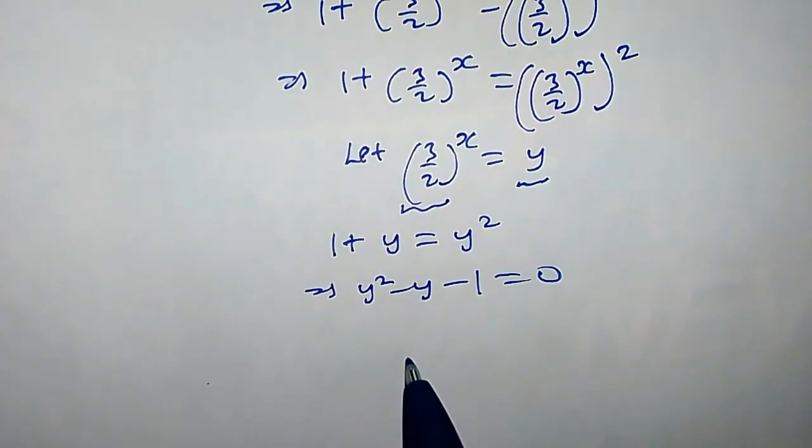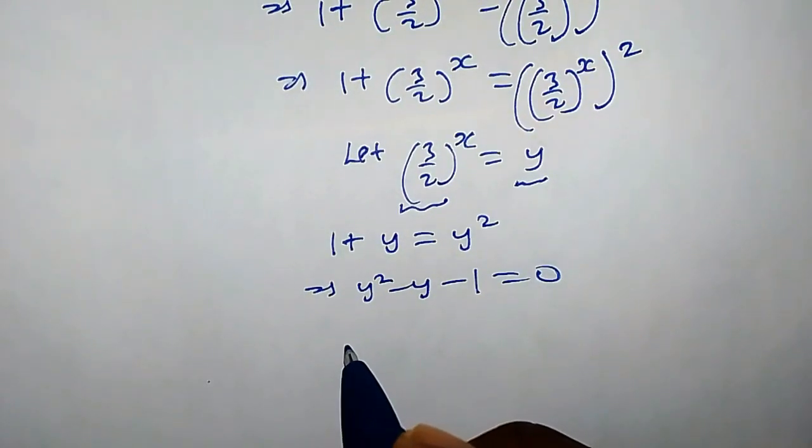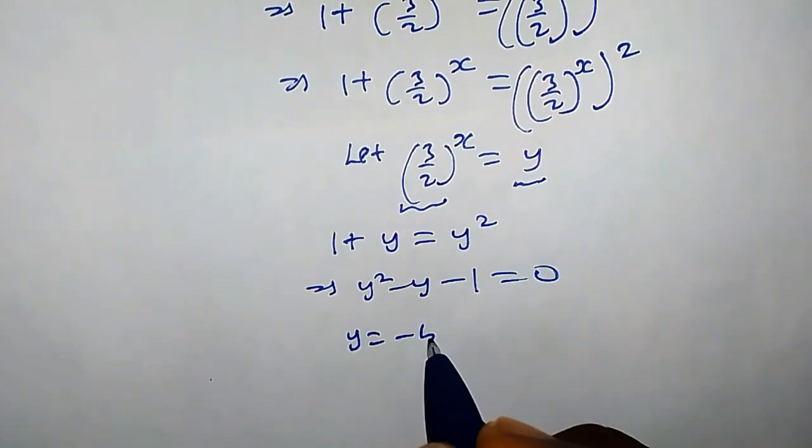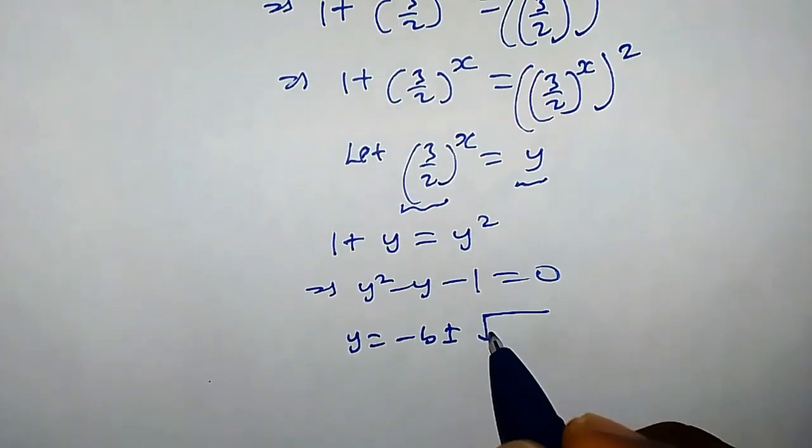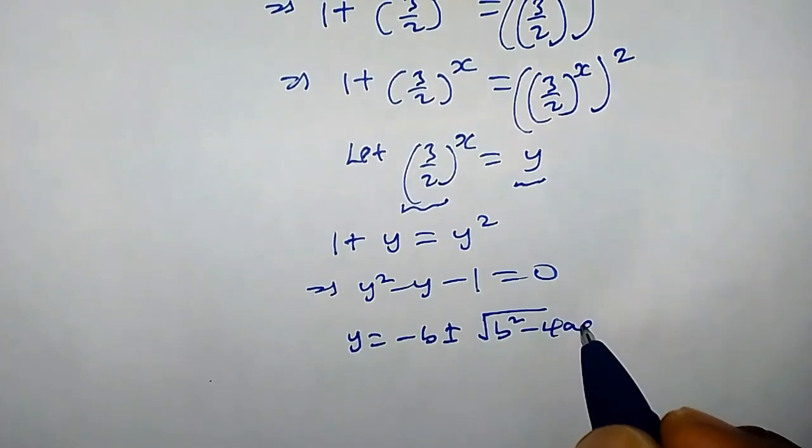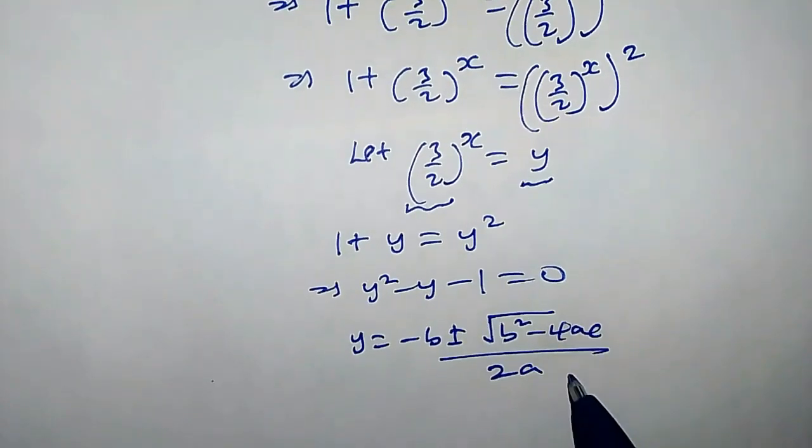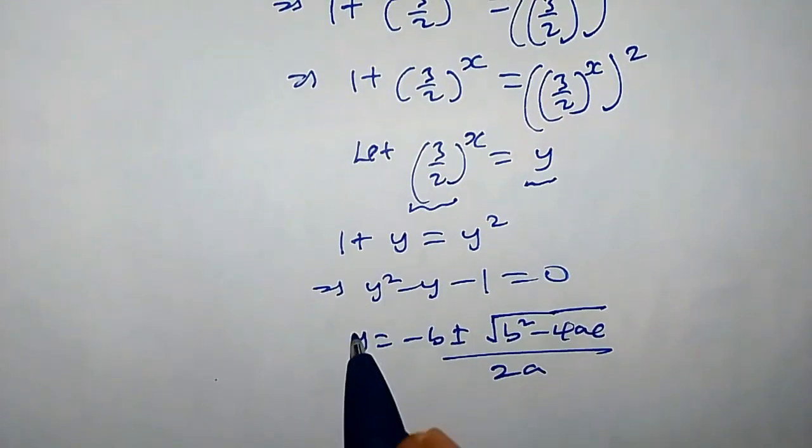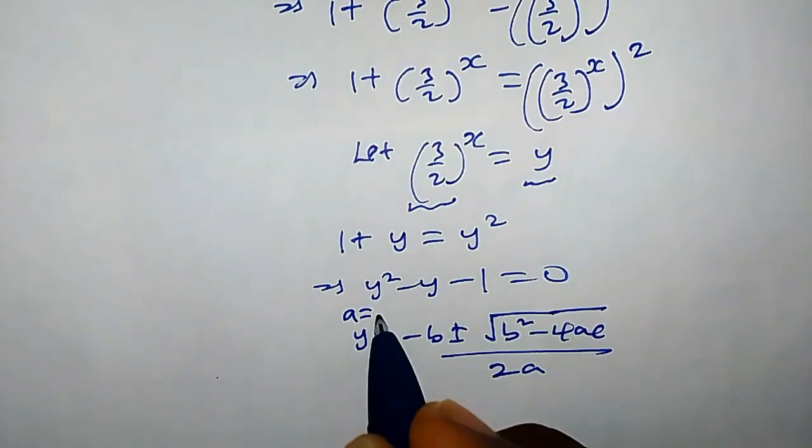So we have y equals minus b plus or minus square root of b² minus 4ac over 2a. The coefficient of y² here is 1, so a is 1, and b is negative 1, also c is negative 1.